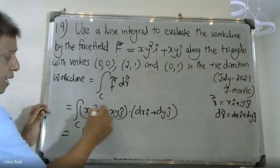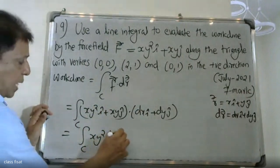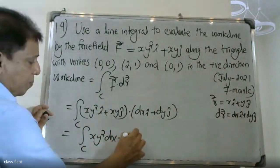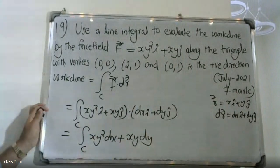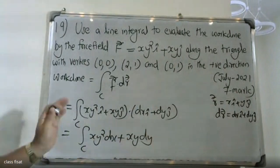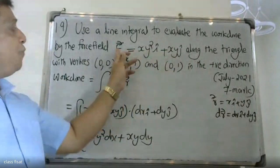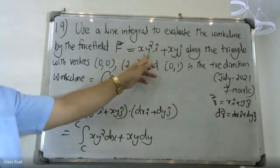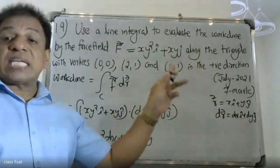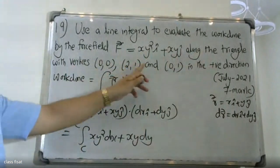Taking the dot product, we get xy² dx plus xy dy. This is the value of the line integral of xy² i plus xy j along the triangle with vertices (0,0), (2,1), and (0,1).